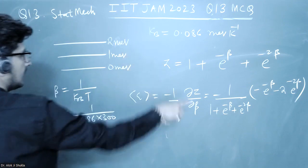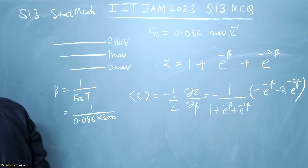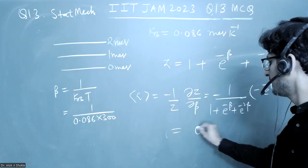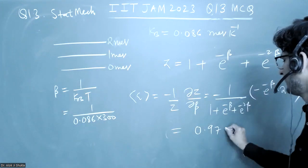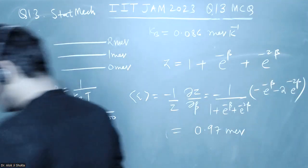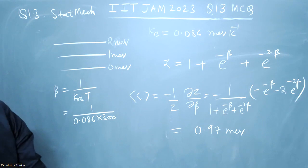So there will be no problem of dimensions. So when you calculate the value, you will get this is equal to 0.97 milli electron volt. So there were four options and one of the options was this.